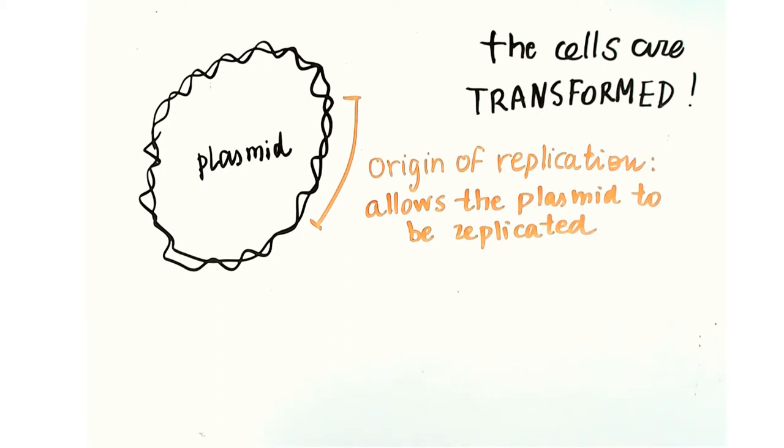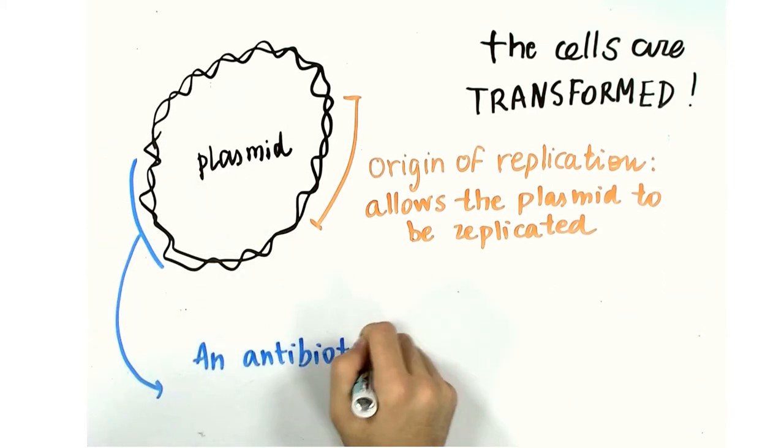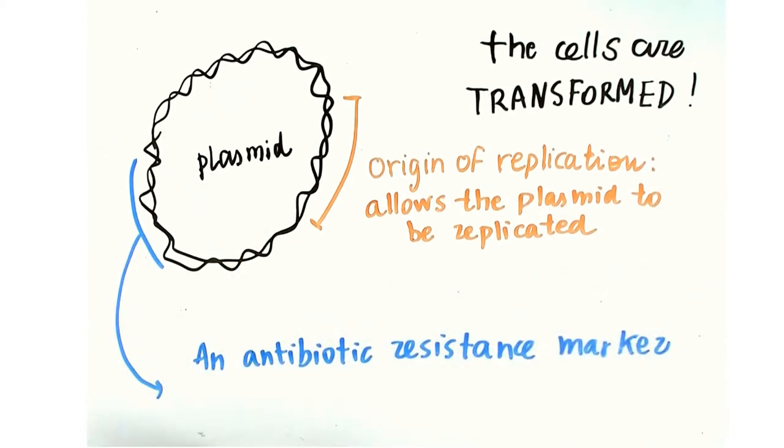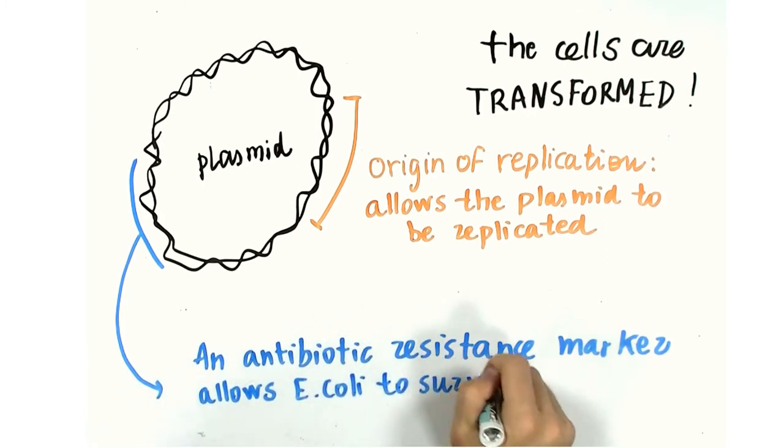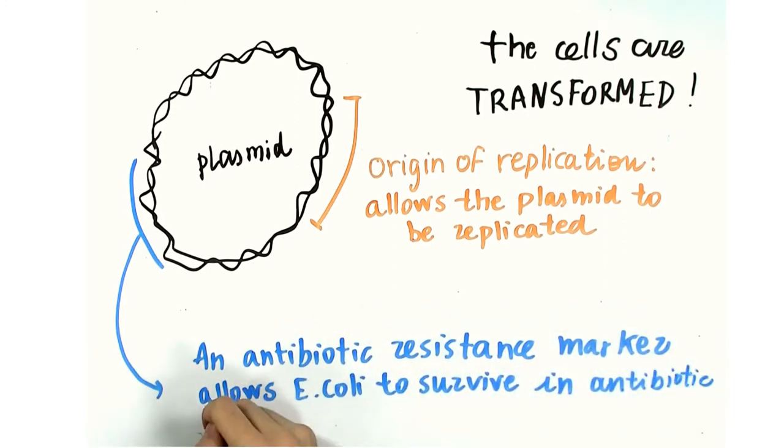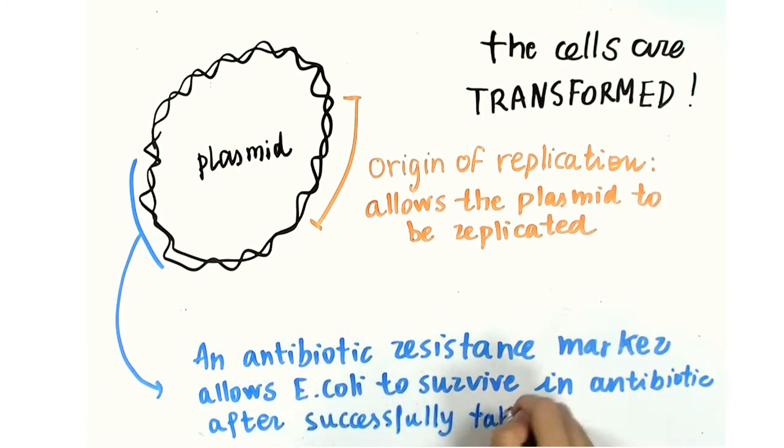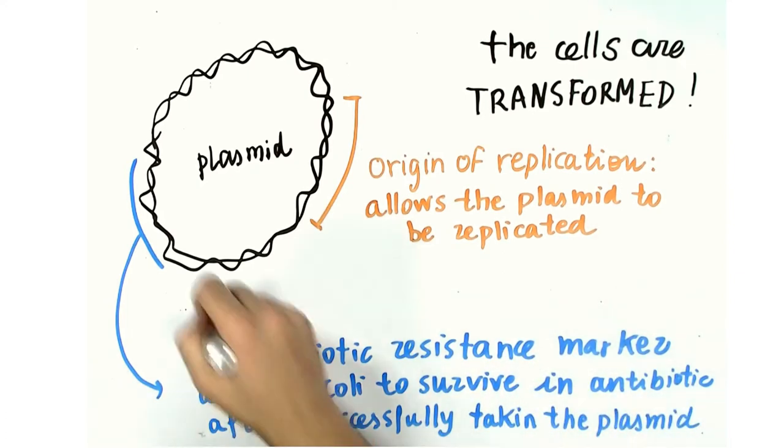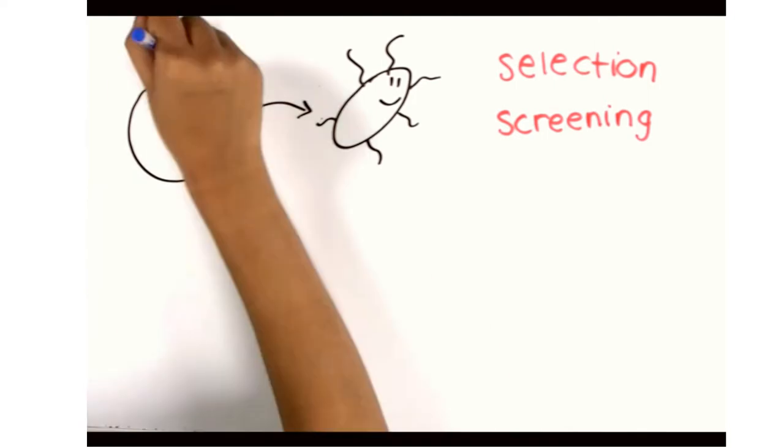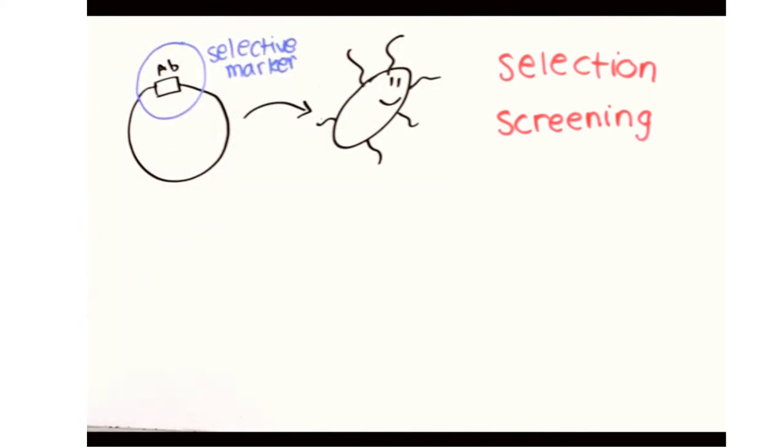Plasmid transformation can be used for selection and screening. This is accomplished by adding a selective marker to your plasmid, most commonly an antibiotic marker on the plasmid backbone, and streaking the transformed E. coli on plates with the antibiotic present in the medium. An antibiotic marker is a DNA sequence on your plasmid that contains your gene of interest also, and it encodes for a protein that allows your bacteria to be resistant to a specific antibiotic.